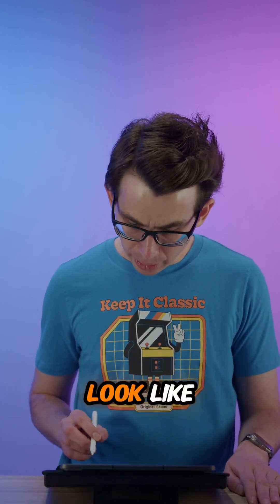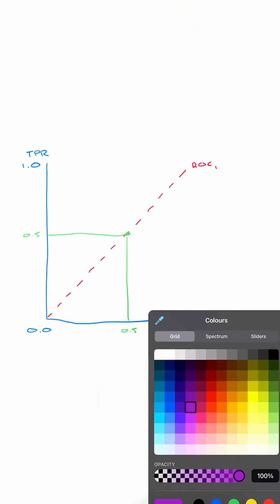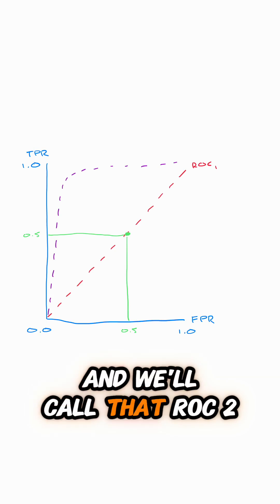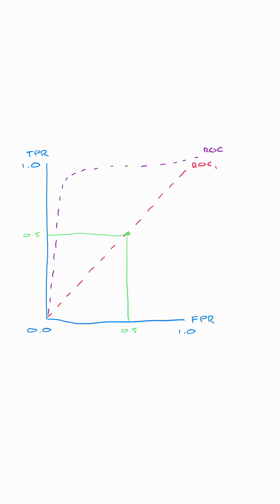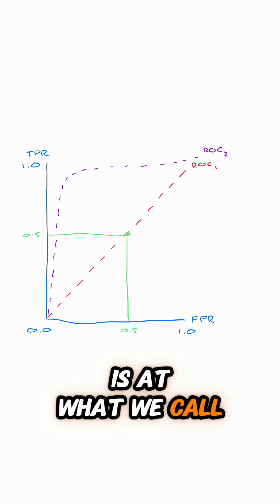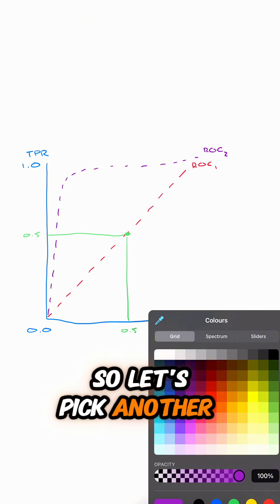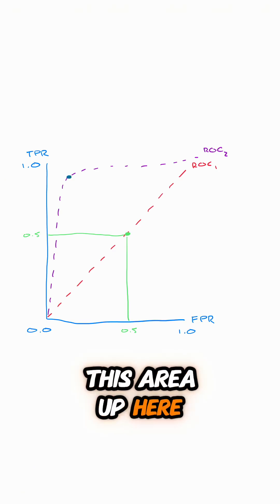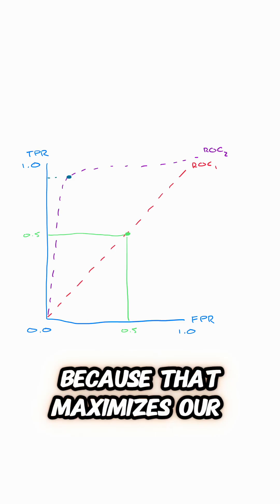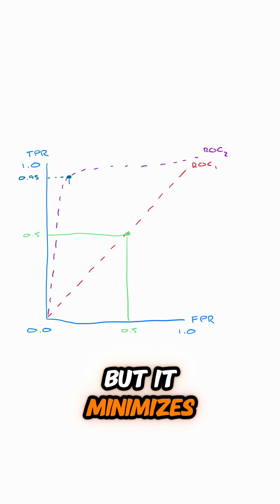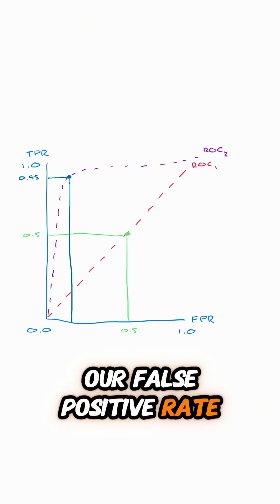A better model would look like this second curve — we'll call it ROC2. The cutoff you most likely want is at what we call the knee of the curve. When I say the knee of the curve, I'm referring to this area up here, because that maximises our true positive rate — which in this case might be 0.95 — while minimising our false positive rate, which might be around 0.1.